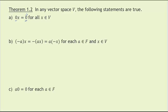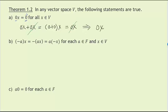One way to prove this: take 0x + 0x. From our properties of vector spaces we know that is the same as (0+0) in the field times x. Since 0+0 in the field is 0, we get 0x + 0x = 0x. These are vectors and it is an abelian group under addition, so we have the cancellation property. Therefore this implies that the scalar 0 times the vector x is equal to the zero vector in the vector space.